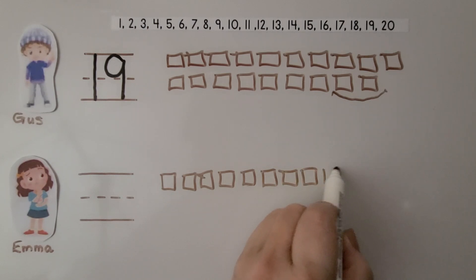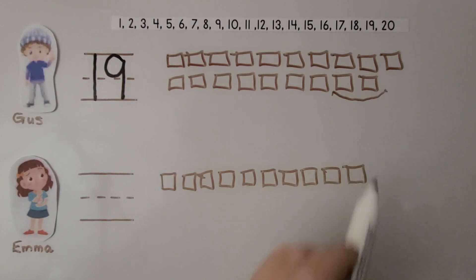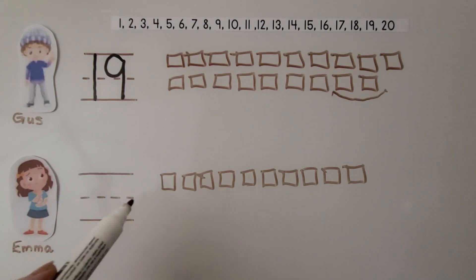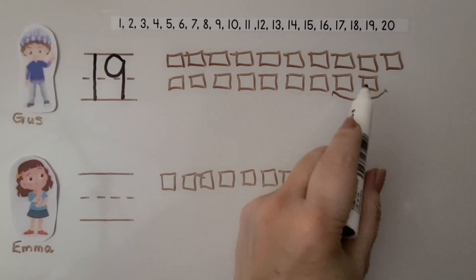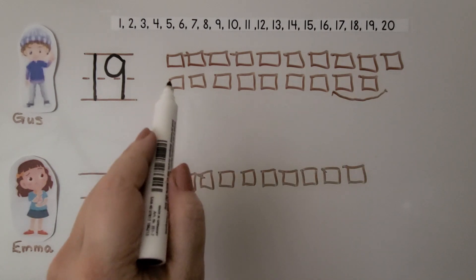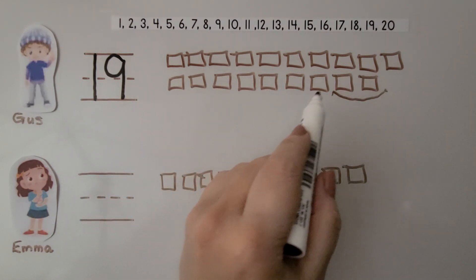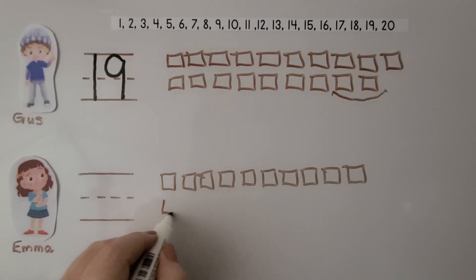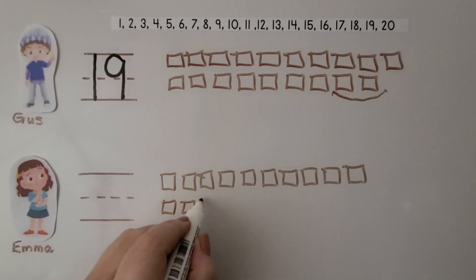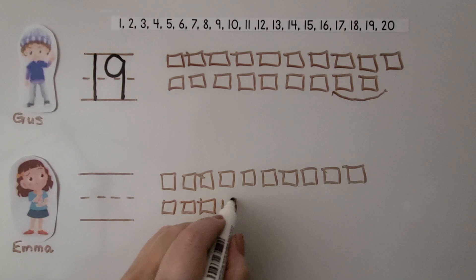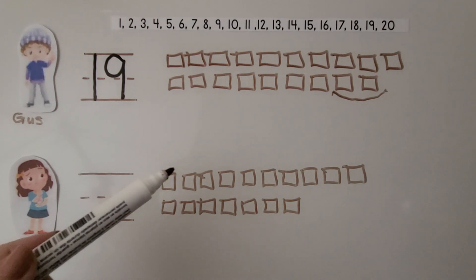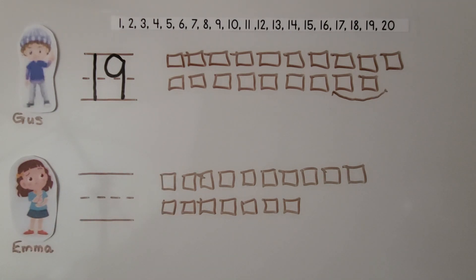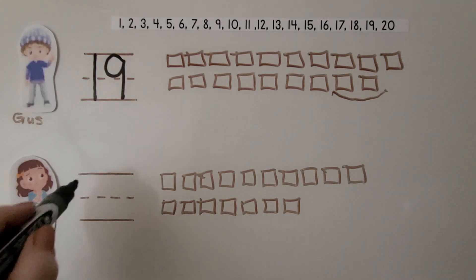We continue counting: 7, 8, 9, 10. We do not draw the 2 extra cubes Gus has. So we draw 7 ones for Emma. That gives us 10 ones and 7 ones. Emma has 17.